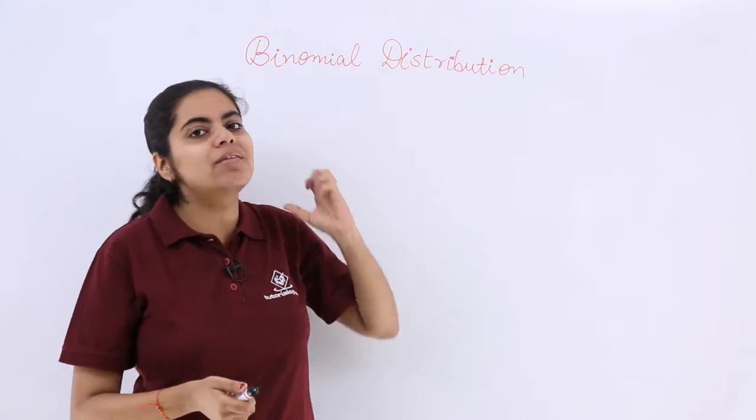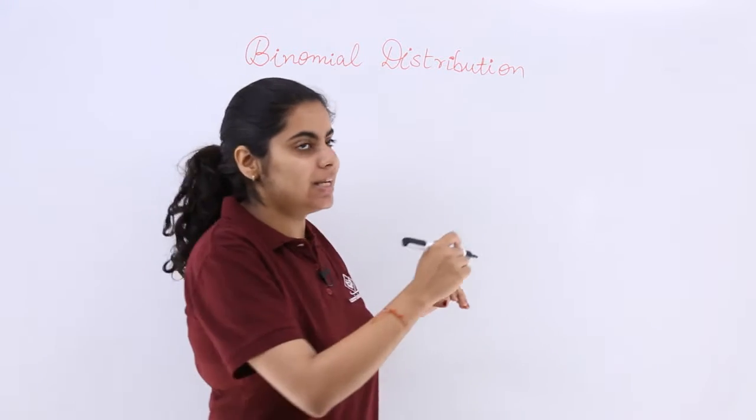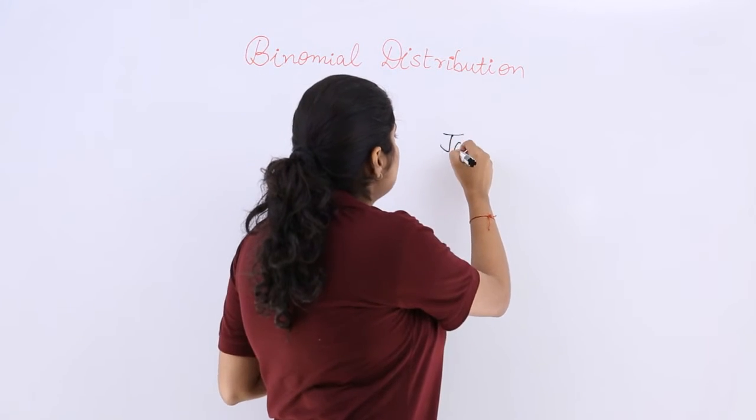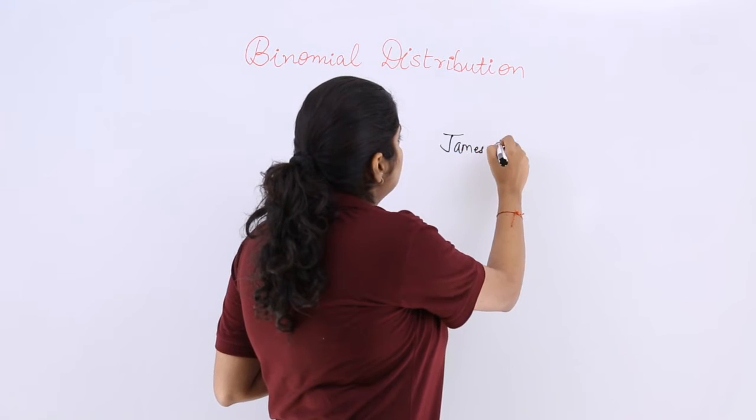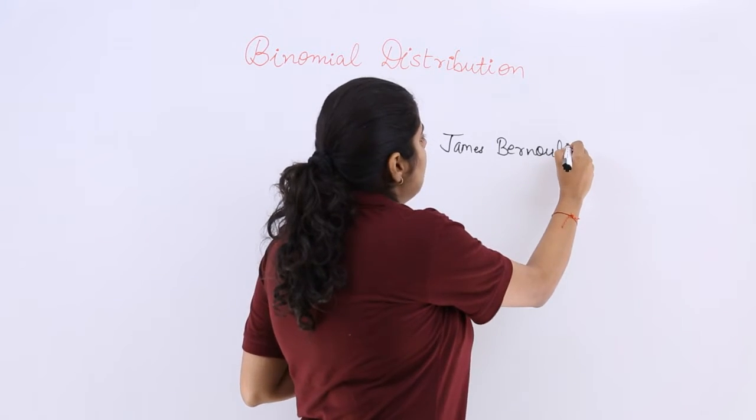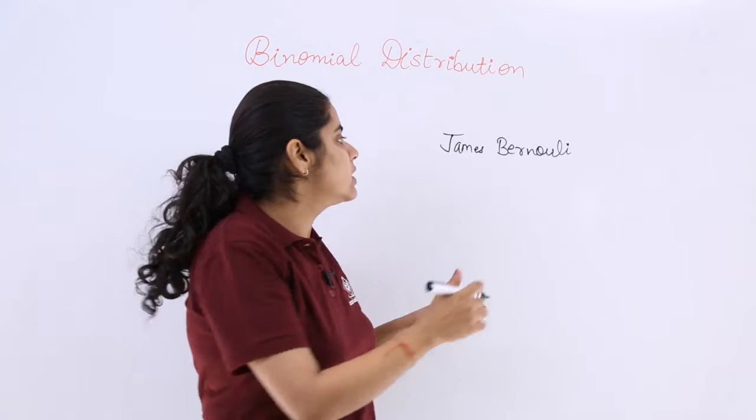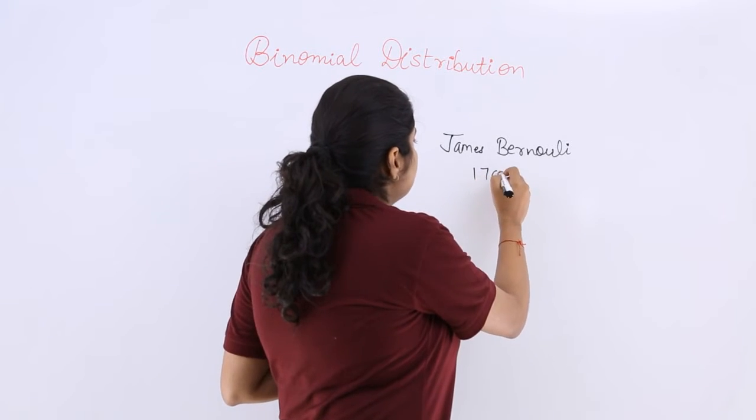But first let's know who gave this idea and concept of binomial distribution. So the person's name is James Bernoulli. He is the one behind this idea of binomial distribution and he gave this idea in the year 1700.